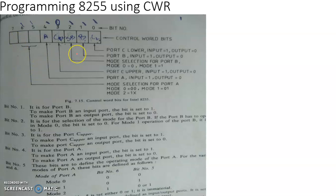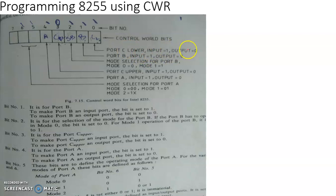The bit pattern of the control word register is shown here. The LSB bit indicates whether Port C lower (PCL) is an input port or an output port. A value of 1 means input port; a value of 0 means output port. So for Port C lower as input port, the corresponding bit is 1; for output port, the bit is 0.